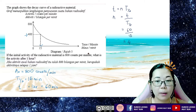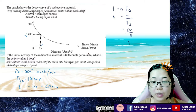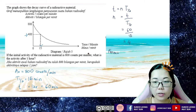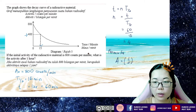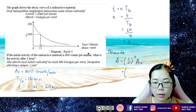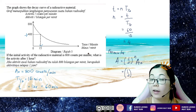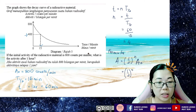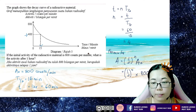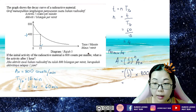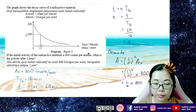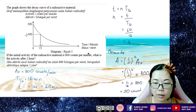The question asks: what is the activity after one hour? Using the formula A = (1/2)^n × A₀, we get (1/2)^4 multiplied by 800 counts per minute. That gives 1/16 times 800, and the answer is 50 counts per minute.